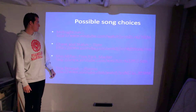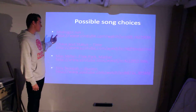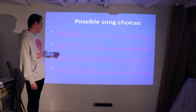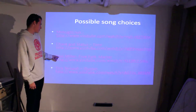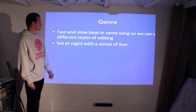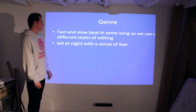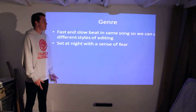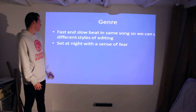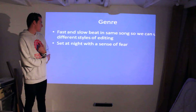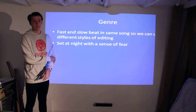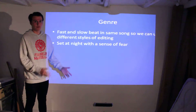These are the possible song choices. We had Midnight Run by Example, Chasing Status Time — and we've done a preliminary on that — Mac Miller's Frick Park Market, and Tiny Tempo Illusion. The genre we've chosen is hip-hop, which has fast and slow beats in the same song, so we can use different styles of editing. We also have the idea of a set at night, which would be different, but we're not sure whether we're going to use that yet.